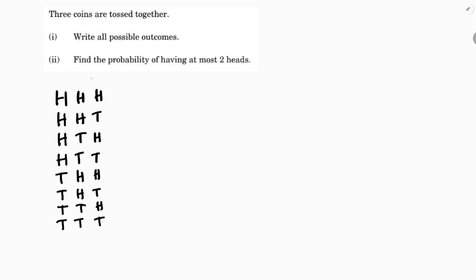With this logic, the total number of outcomes is eight. The eight possible outcomes are: HHH, HHT, HTH, THH, HTT, THT, TTH, TTT. So total outcomes are eight.